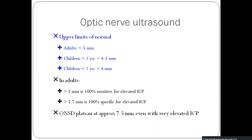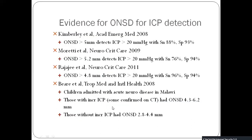The upper limits of normal are: in adults, less than five millimeters; in children over one year, less than 4.5 millimeters; and in children under one year, less than four millimeters. When you get more than five millimeters, it is 100% sensitive for elevated ICP. More than 5.7 millimeters is significantly specific for ICP, and values can go up to 7.5 millimeters as the maximum. Different studies suggest that more than five millimeters is an indicator of increased ICP with varying sensitivity and specificity.